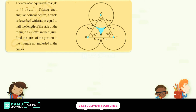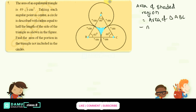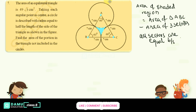To find the area of the shaded region not included in the circles, we write: area of shaded region = area of triangle ABC minus area of 3 sectors. All three sectors are equal because each angle is 60 degrees.